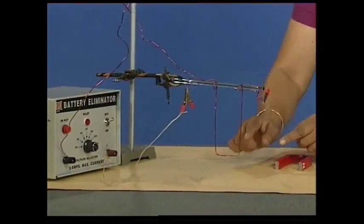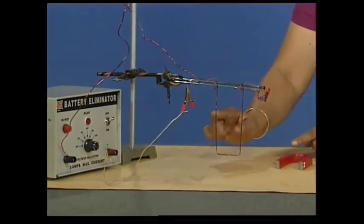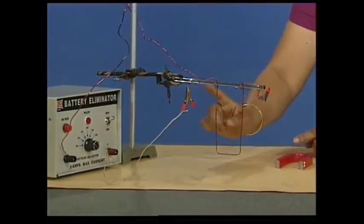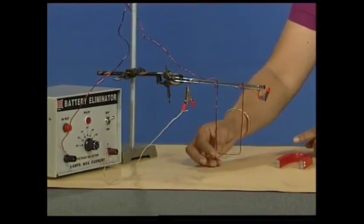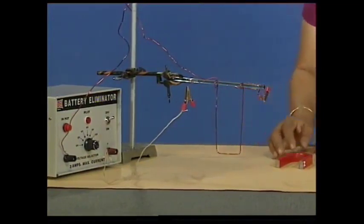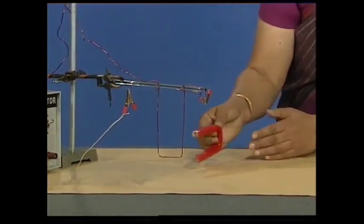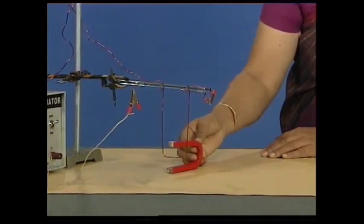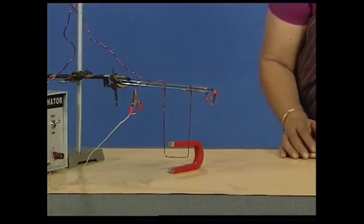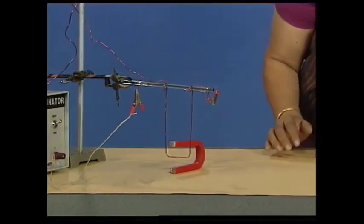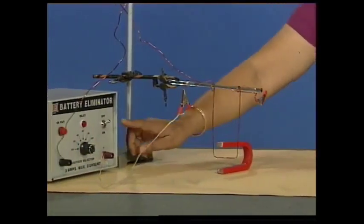Suppose we bend a wire in the shape of a small swing and hang it in such a way that it is free to move. And if we bring a strong horseshoe magnet and place it like this, we will now switch on the current.